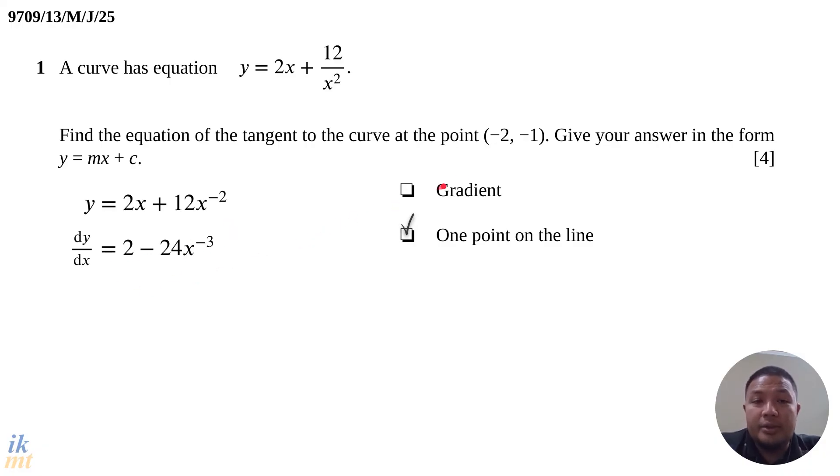And then after that, we'll substitute the value x = -2. We'll find that gradient. So the gradient of the line that we want, just substitute -2 in there. Do it carefully and you'll get 5. Very convenient for you. Very nice number there, 5.